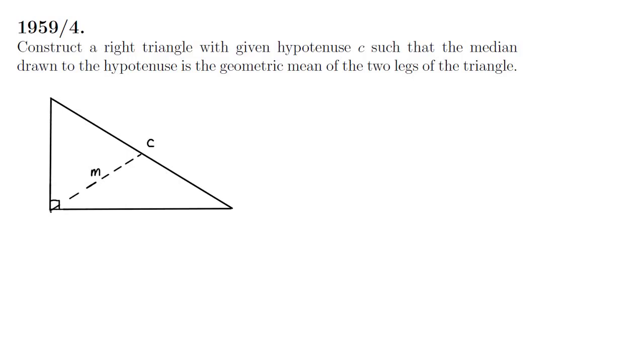We're asked to construct a right angled triangle with the given hypotenuse c such that the median drawn to the hypotenuse is the geometric mean of the other two legs of the triangle.